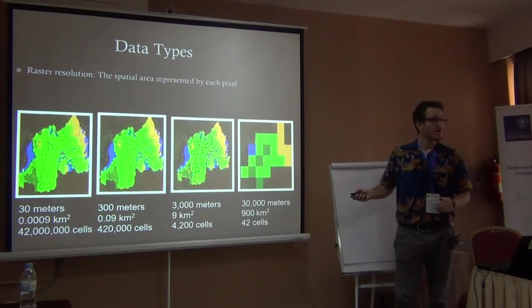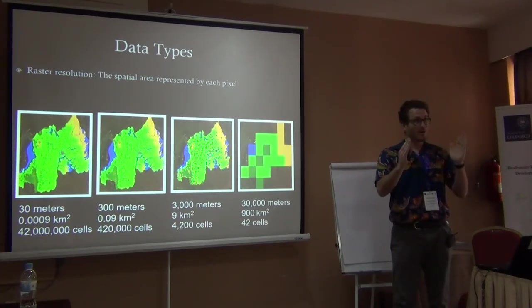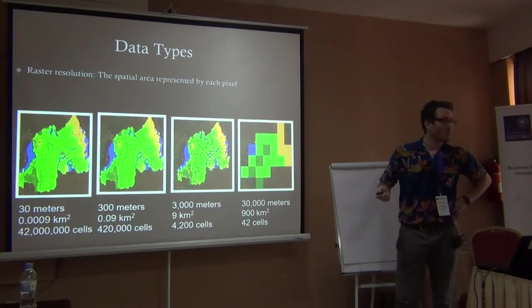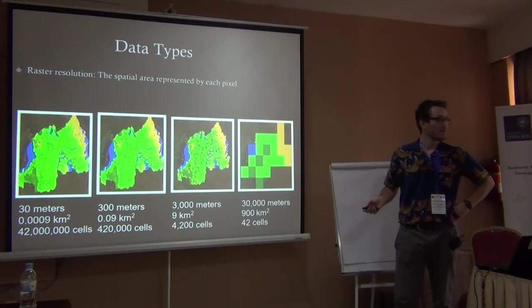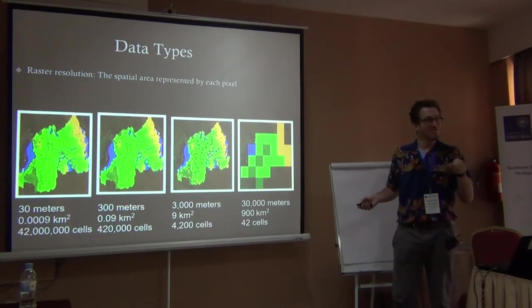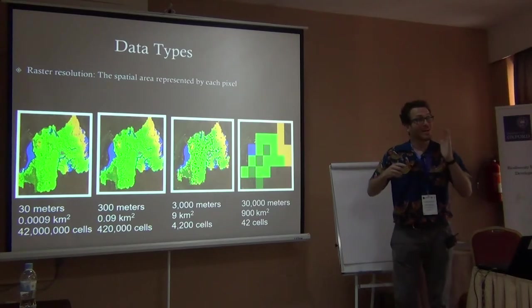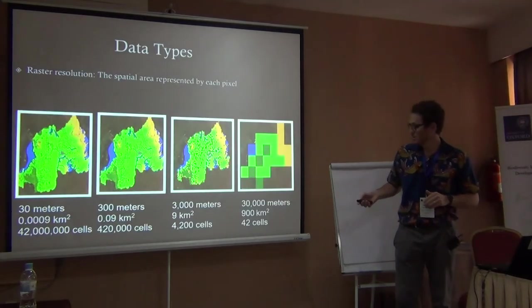If we decrease the resolution by a factor of 10 — increasing the cell size — what happens to the area of each cell? It squares, because area equals length times width. So multiplying cell side by 10 multiplies area by 100. As we keep going with larger cells, the number of cells drops dramatically but each cell covers much more area.